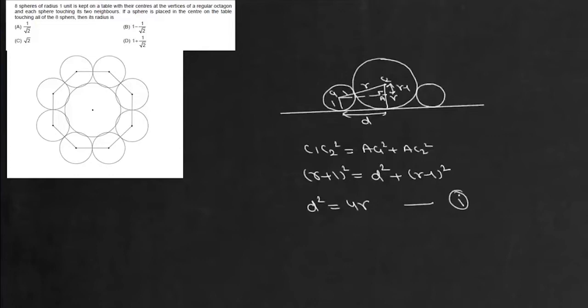Now if we look at the distance D from the top view, this distance is the distance between the centers. This length is 1 and 1, so 2 units, and this angle is 2π/8, which is π/4.